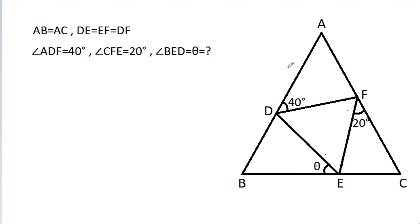In this video, we have given that AB is equal to AC, and DE is equal to EF is equal to DF. Angle ADF is 40 degrees, angle CFE is 20 degrees, and angle BED is theta. We have to find theta.